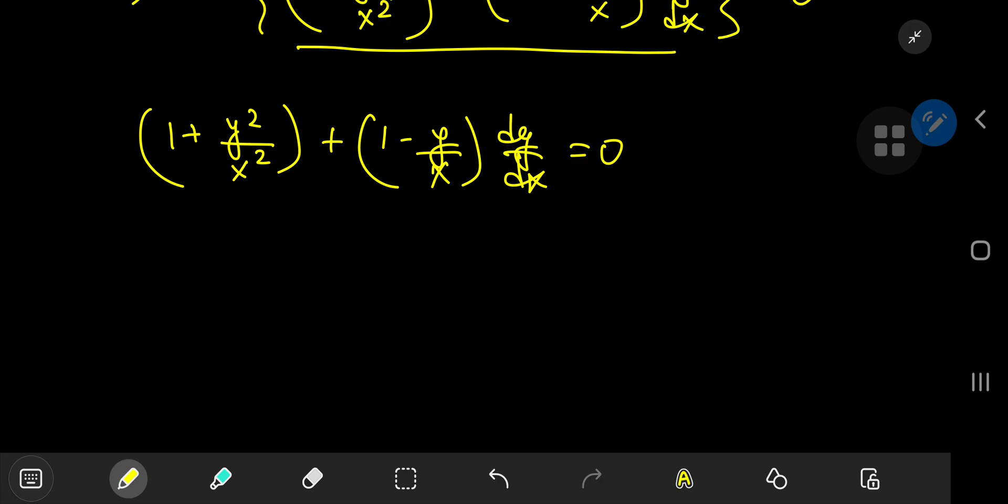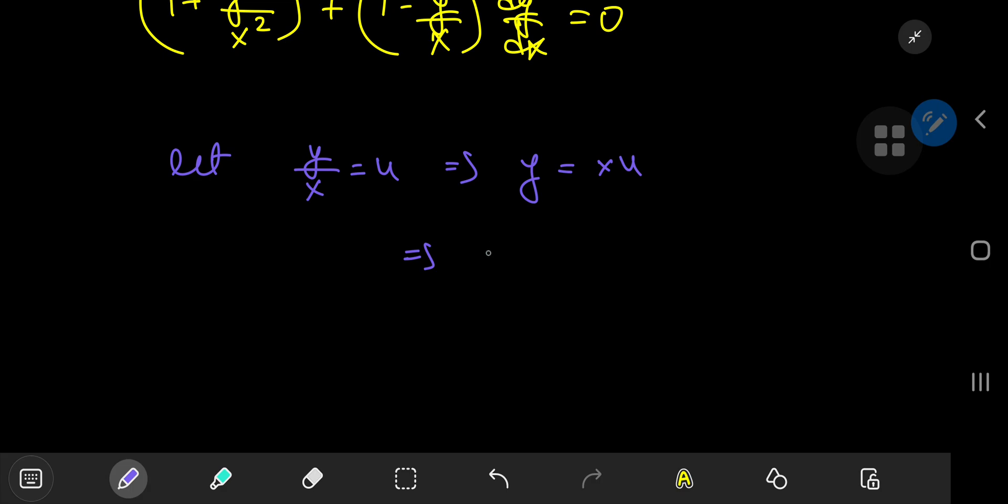So the structure here is quite nice for a substitution, where we let y by x equal to u. Now this here implies that y equals x times u. And on differentiation with respect to x, we have dy by dx being equal to du by dx times x plus u.